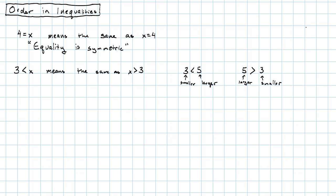This happens because the inequalities, they're not symmetric. They're what's called anti-symmetric. So 3 is less than x means exactly the opposite of x is less than 3.